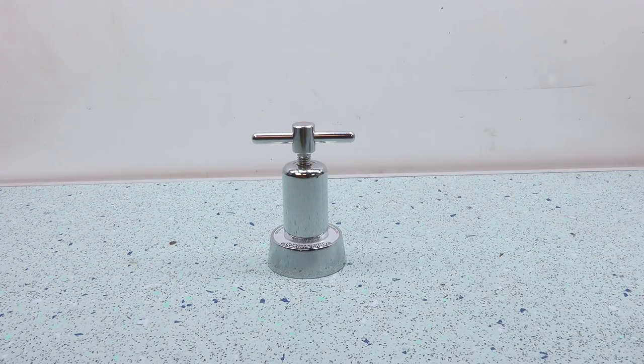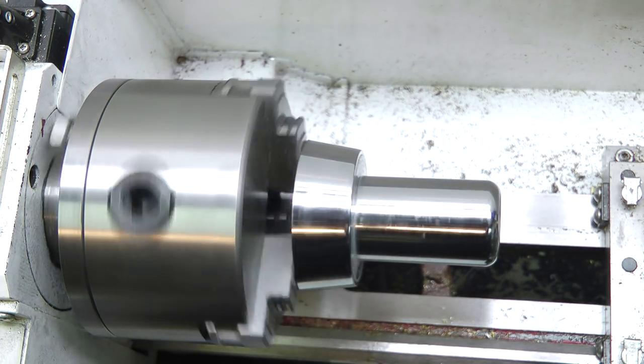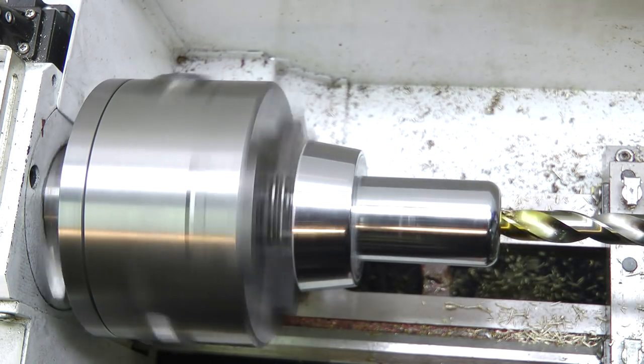I unscrewed the cap and mounted it in the lathe. I wanted to enlarge the bore to take my MT2 sleeve, which has a 1 inch OD. I began by opening out the hole in the end with a twist drill.